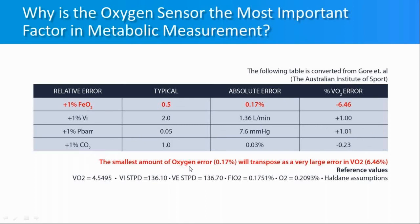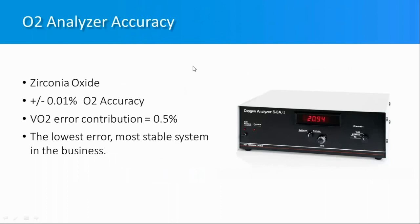The Moxis system uses a zirconia oxide cell for oxygen measurement, which is not typical in many metabolic systems but is the basis for the system's success. The zirconia oxide cell runs at about 700 degrees inside the cell. Its accuracy is very high and its VO2 contribution is very low compared to most other systems. Zirconia is also extremely stable over a long period of time.